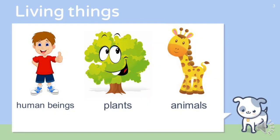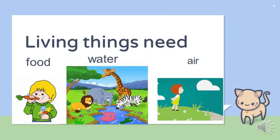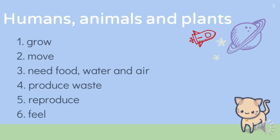What are living things? Human beings, plants and animals are living things. Living things need food, water and air to live. Humans, animals and plants are living things.